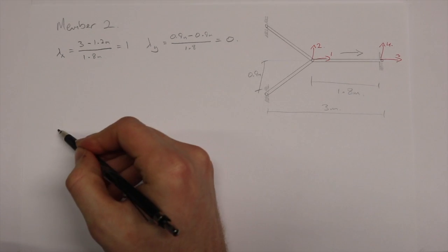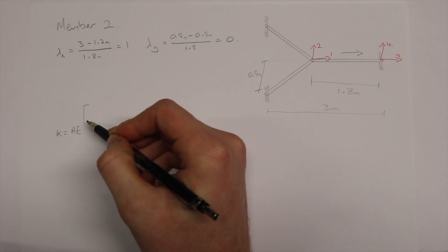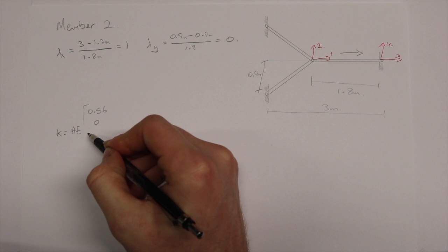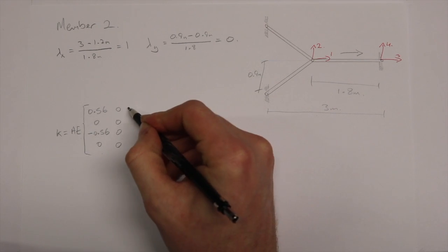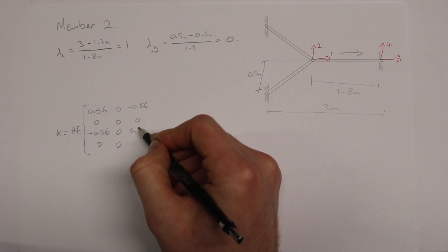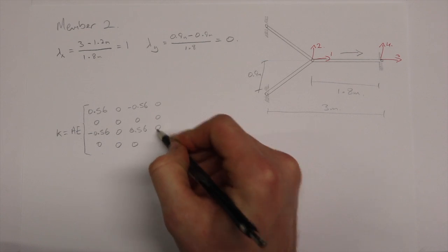Now we can create our member matrix as before, and as you may notice, the matrix is symmetrical either side of the diagonal. That is the same for all matrices created here. Once your calculations are correct, we label the matrix again with our degrees of freedom.